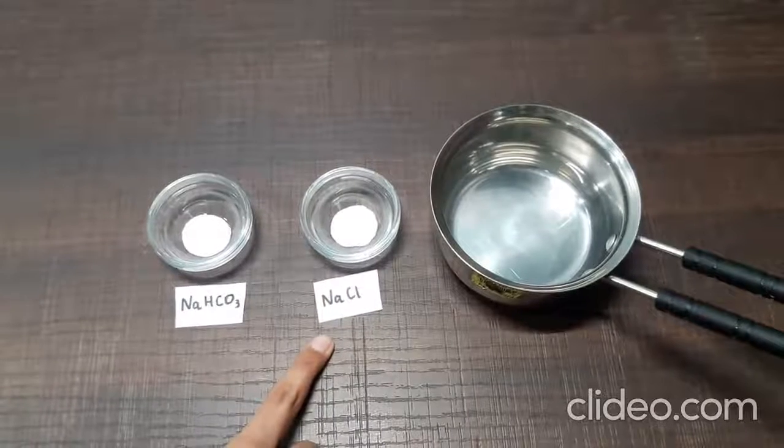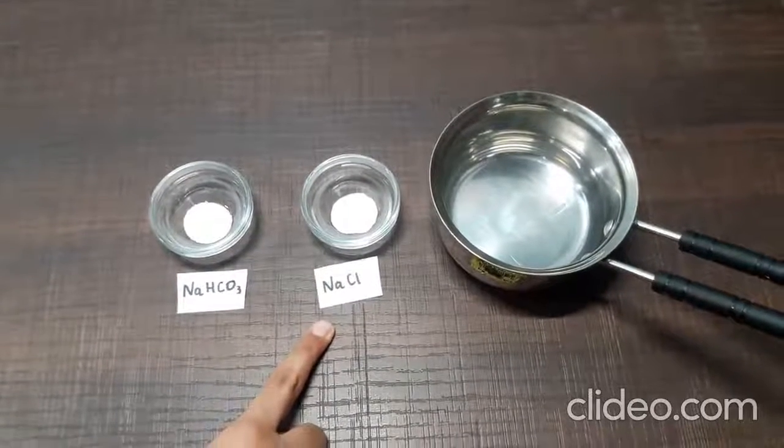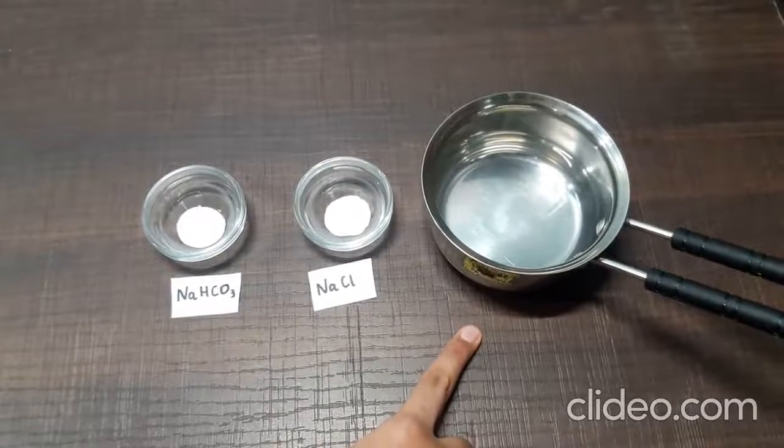The NaCl, sodium chloride or table salt, acts as an electrolyte and hot water is used to increase the rate of the reaction.